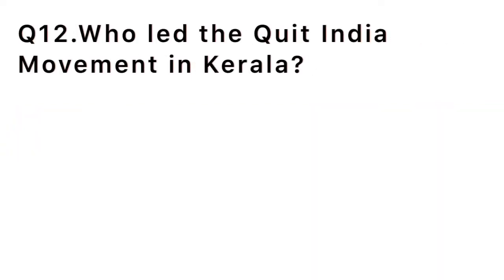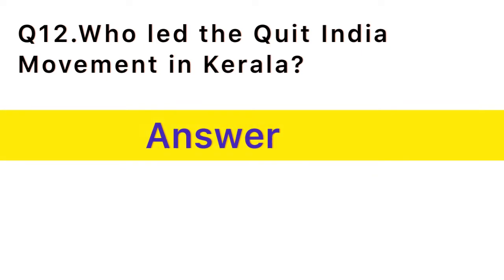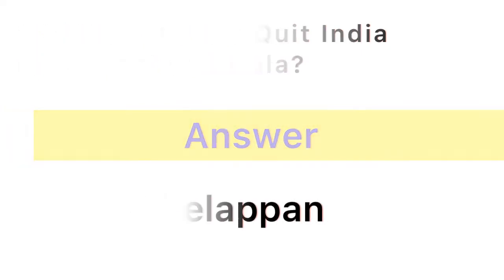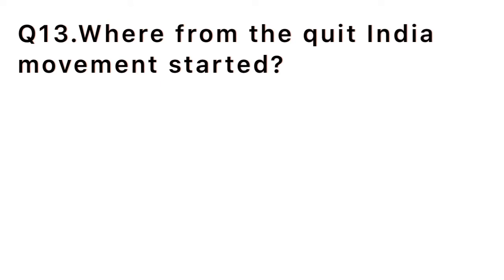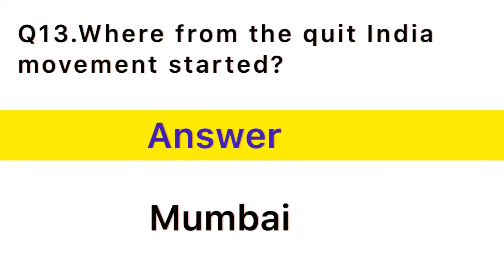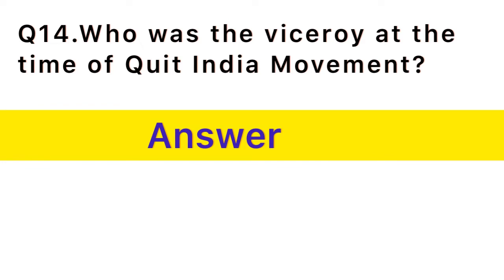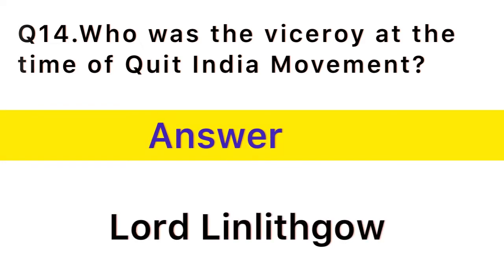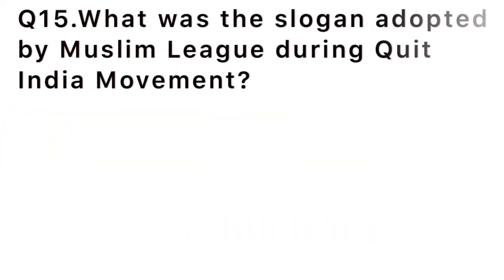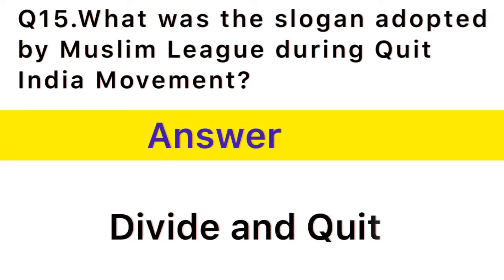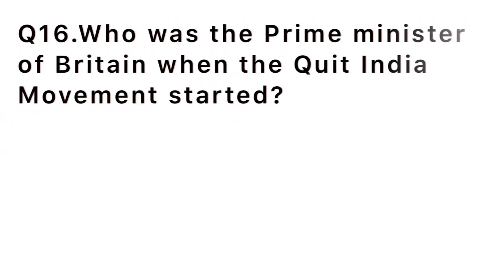Question number 12: Who led the Quit India Movement in Kerala? Answer: KK Lappan. Question number 13: Where did the Quit India Movement start? Answer: Mumbai. Question number 14: Who was the Viceroy at the time of Quit India Movement? Answer: Lord Linlithgow. Question number 15: What was the slogan adopted by Muslim League during Quit India Movement? Answer: Divide and Quit.